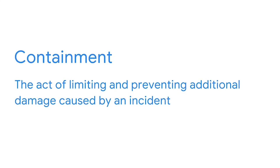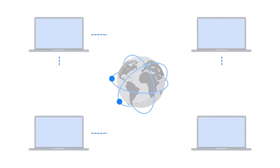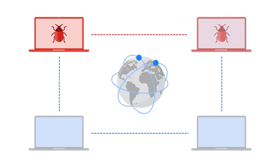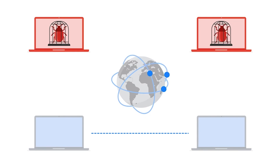Containment helps meet the goals of eradication, which helps meet the goals of recovery. This phase of the life cycle also integrates with the core functions of the NIST cybersecurity framework: respond and recover. Containment is the act of limiting and preventing additional damage caused by an incident. Organizations outline their containment strategies in incident response plans, detailing the actions that security teams should take after an incident has been detected. For example, a common containment strategy for a malware incident on a single computer system is to isolate the affected system by disconnecting it from the network, preventing the spread of malware to other systems.